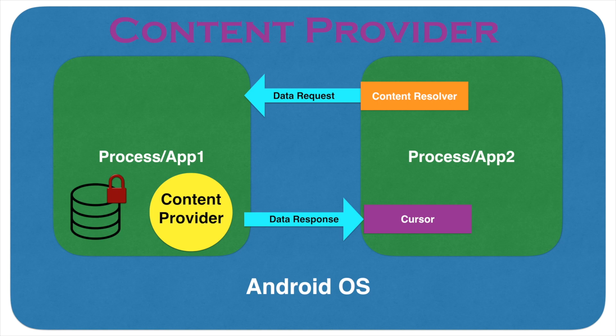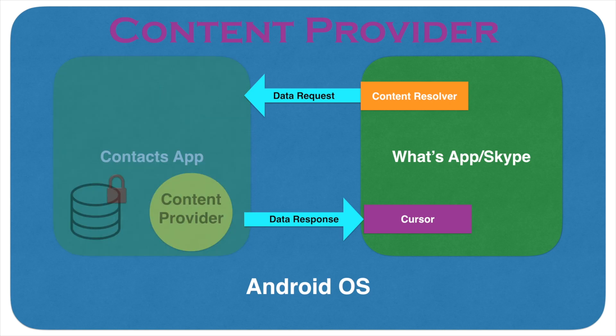In a real-world scenario, App1 could be a contacts app which contains different contacts stored by the user in the device. And App2 could be a WhatsApp or a Skype app which is trying to access the contacts stored in the device. The Content Provider abstracts the way this communication happens. So from App2's perspective — that is a WhatsApp or Skype perspective — it doesn't really matter how the data is stored in the contacts app.